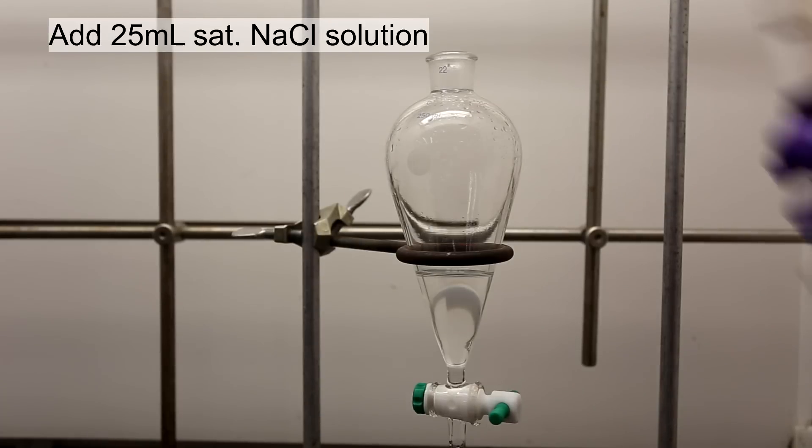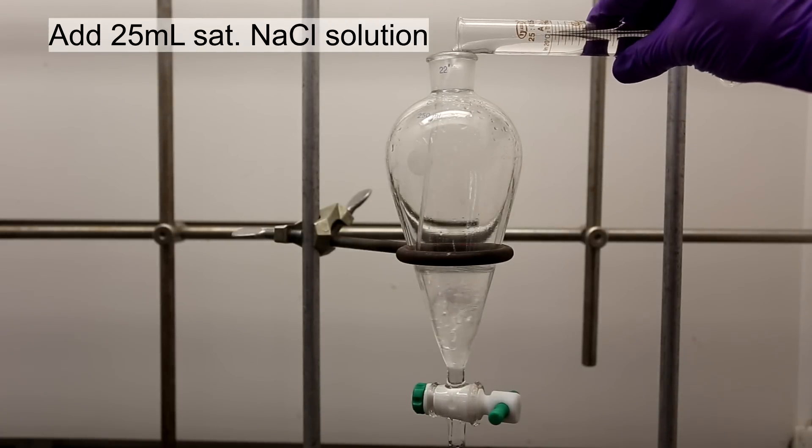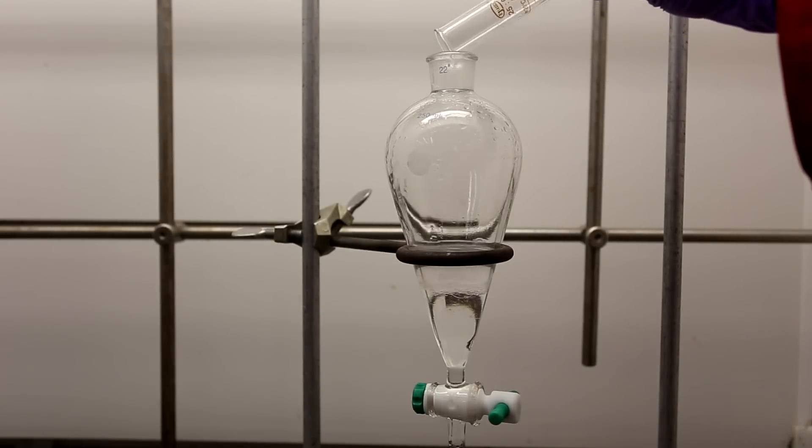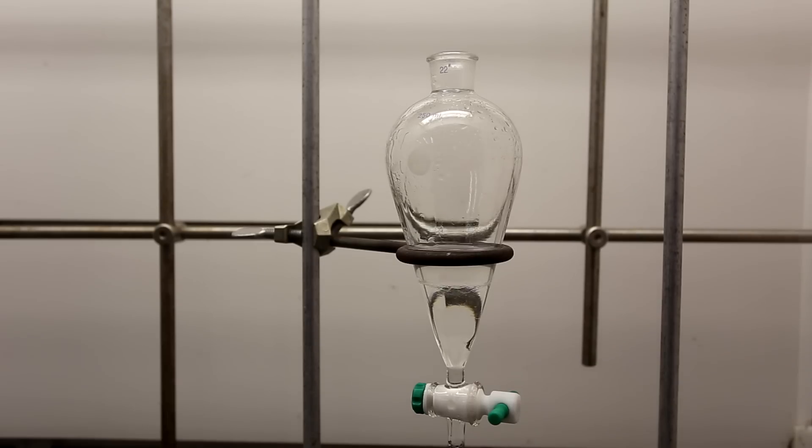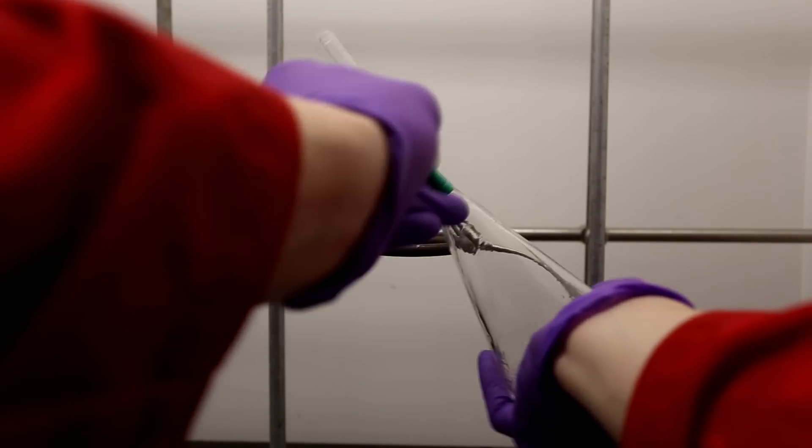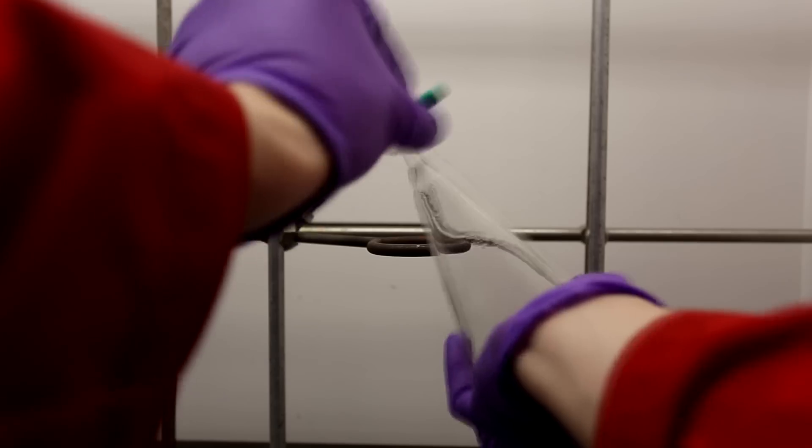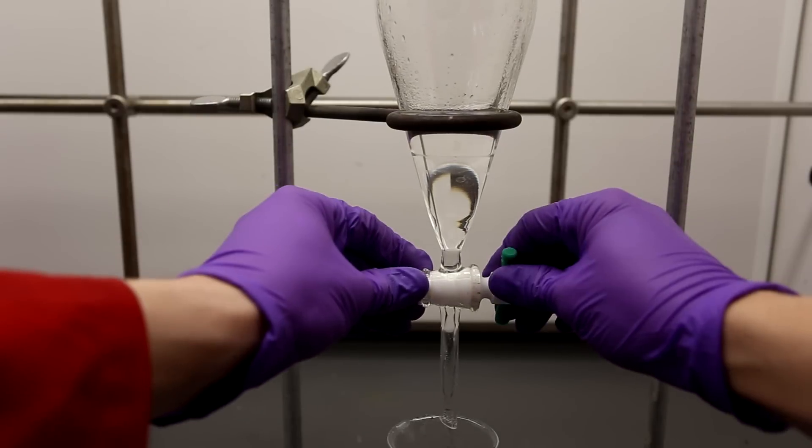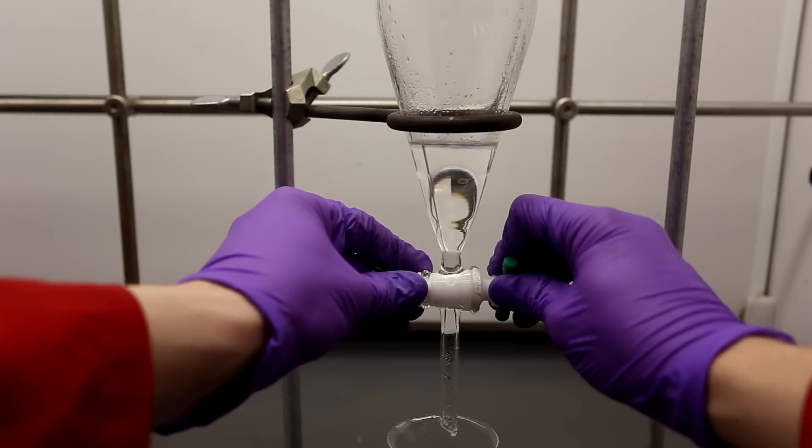Finally, the pentyl acetate is washed with 25 milliliters of saturated sodium chloride solution. After a thorough mixing, the layers separate and the sodium chloride solution is discarded. The saturated sodium chloride is used to dry the organic layer.